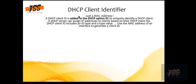Another very important concept is the Client Identifier. A DHCP client ID is added to DHCP Option 61 to uniquely identify a DHCP client. A DHCP server can assign an IP address to the client based on their DHCP client ID, which is essentially the MAC address. The DHCP client ID includes an ID type and type value, using the MAC address of an interface to generate the client ID.